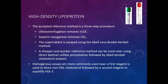For high density lipoprotein (HDL), the accepted reference method is a three-step procedure: ultracentrifugation to remove VLDL, treatment with heparin and manganese to remove LDL, and then the remaining supernatant is assayed using the Abel-Levy-Brodie-Kendall cholesterol analysis method. A cheaper and quicker reference method uses direct dextran sulfate to precipitate non-HDL cholesterols, followed by an Abel-Kendall cholesterol analysis. Homogenous assays more commonly used in clinical labs use a first reagent to block all non-HDL cholesterol, then a second reagent to quantify HDL cholesterol.